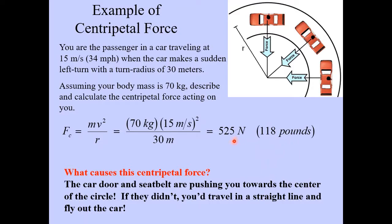Now let's think about what this force means. How does this force act on you? Well remember that a centripetal force always pushes towards the center of the circle. So that means when you are in a car as a passenger here and when you make a left turn there is something pushing you to the left. Now what is it? Well it's going to be the car door and the seat belt are going to push you towards the center of the circle and if they didn't what would happen? Well you'd travel in a straight line and fly right out of the car.